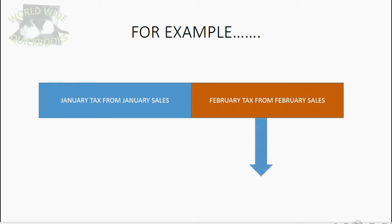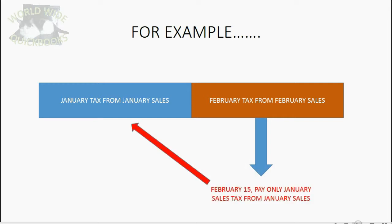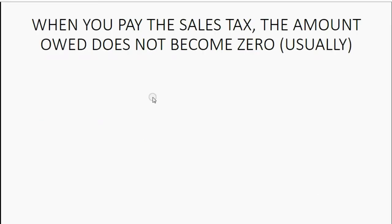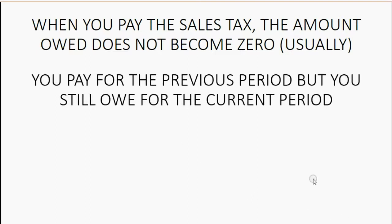During February you will have to pay for the tax that you accumulated during the previous month. That means at the moment you pay sales tax, the amount indicated as owed does not go down to zero. That's because at the moment you pay, you are paying for the previous month, but you still owe for the current period and the current month. All the tax from the sales of the current month will be paid in the next month, and so on.